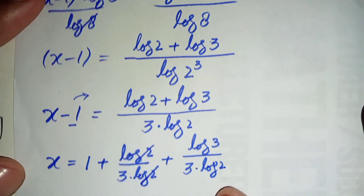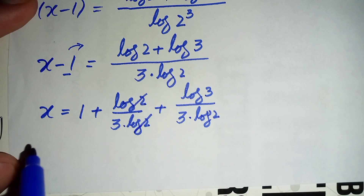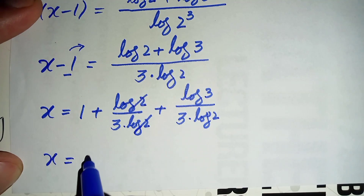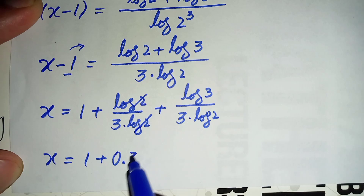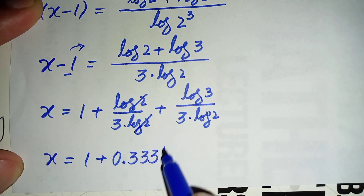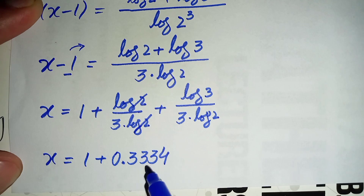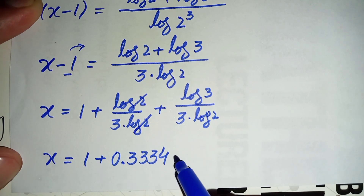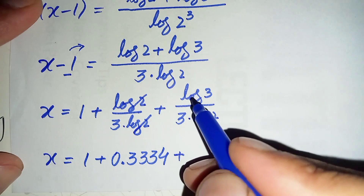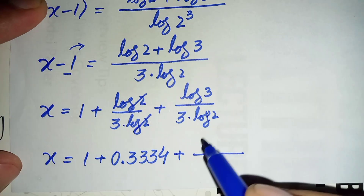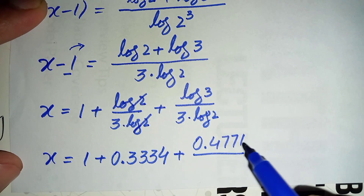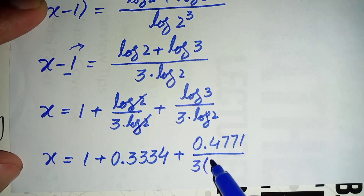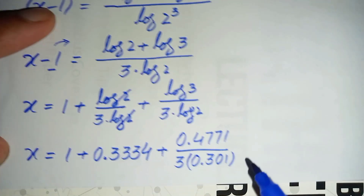Here log 2 and log 2 cancel, leaving 1 over 3, which equals 0.3334 to 4 decimal places, since this is a non-terminating decimal. We now substitute the values: log 3 equals 0.4771 and log 2 equals 0.301.